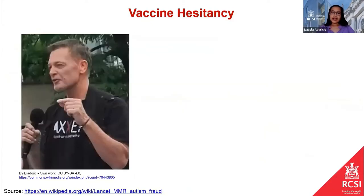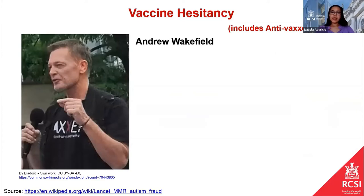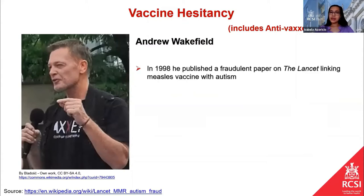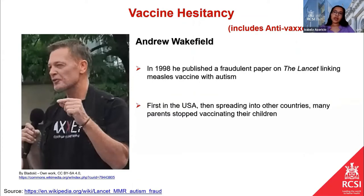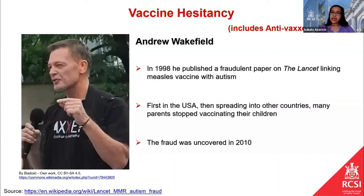Vaccine hesitancy is a broad term which includes what some may know as the anti-vaxxer movement. This all started with Andrew Wakefield, who in 1998 published a fraudulent paper in the prestigious journal The Lancet linking the measles vaccine with autism. This got a lot of media coverage, there was widespread outcry, and as a result many parents decided to stop vaccinating their children. Twelve years later, the fraud was fully uncovered, the paper was retracted, and this man lost his medical registration. But by then, the damage was already done.